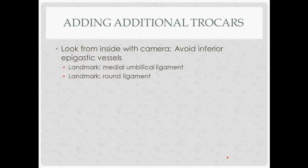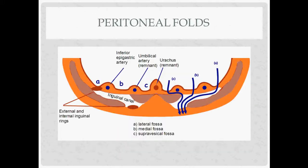When adding secondary ports, the key is to avoid the inferior epigastric vessels — the most common vessel injured during pelvic surgery. There are two landmarks to help. With the camera at the belly button, find the medial umbilical ligament (umbilical artery remnant) and look lateral to it for the lateral fold containing the inferior epigastric artery — place your trocar lateral to that fold. Alternatively, find where the round ligament enters the deep inguinal canal, which is just lateral to the inferior epigastric. Stay lateral to the round ligament and you're safe.